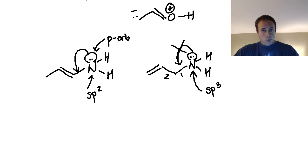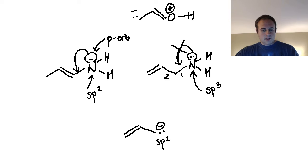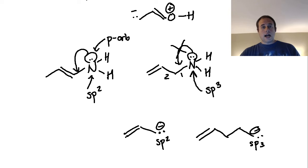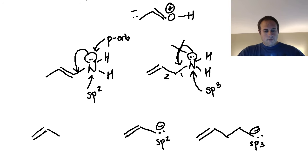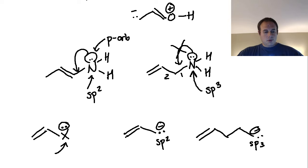Since the lone pair cannot participate in resonance, it exists in a hybrid orbital and the nitrogen is sp3 hybridized. You can apply the same logic to carbanions. A carbanion that is one space away from a pi bond would be sp2, while a carbanion two spaces away would be sp3 — the lone pair cannot participate in resonance and goes into a hybrid orbital. The key is: if a lone pair on any atom — carbon, oxygen, nitrogen — is one space away from a pi bond, whether a double bond or triple bond, you have the potential for resonance and the atom becomes sp2.